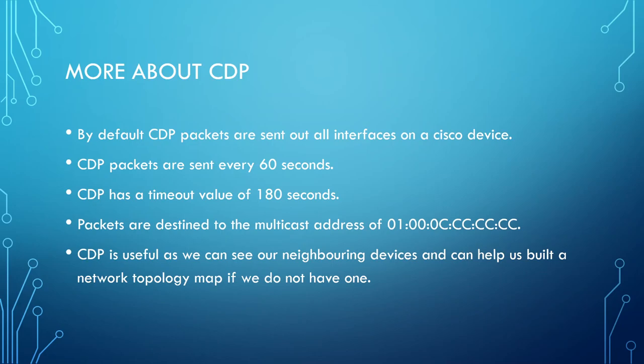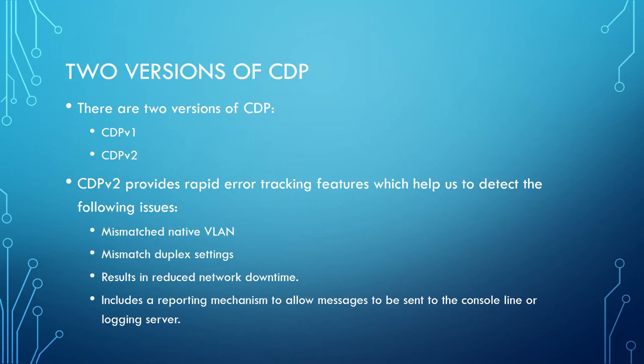It's good practice for every network you build or work in to have a network topology map - showing which devices connect to which ports. However, if a network doesn't have a topology diagram, CDP allows us to go into the devices and see the neighboring information. We can log into a device, see whose its neighbors are, then jump into those neighbors and see their neighbors, and slowly build a complete topology map.